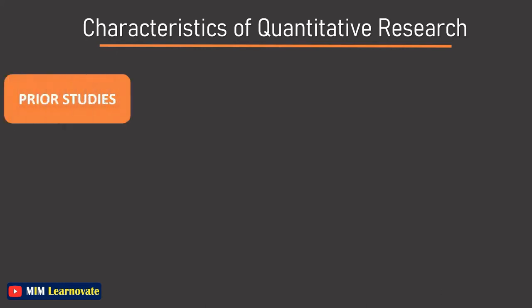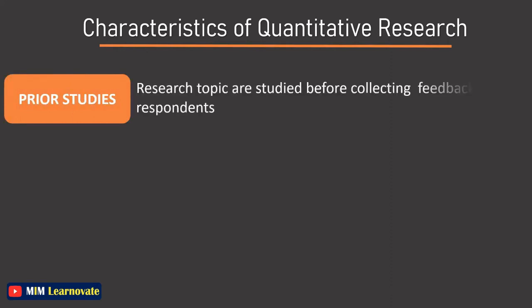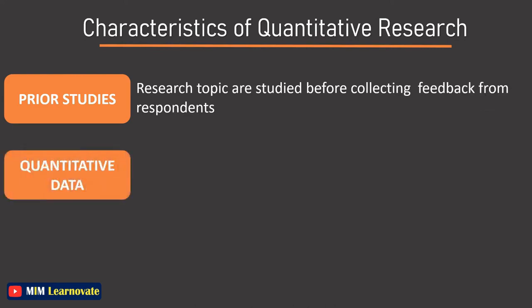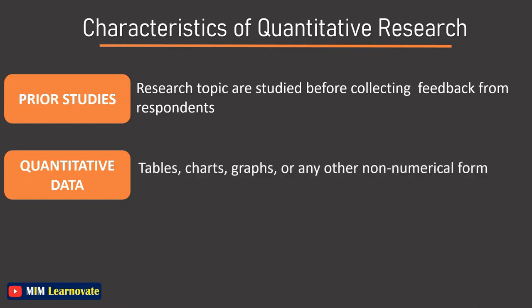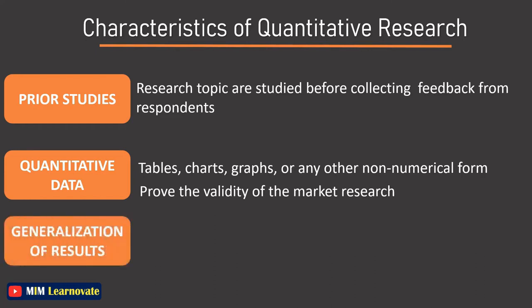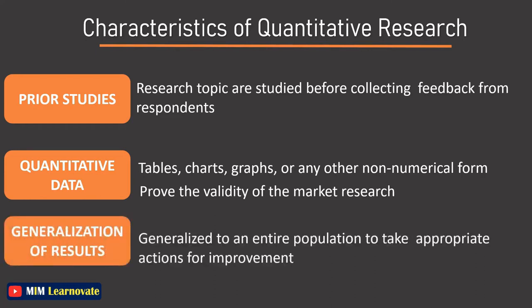Prior studies: Various factors related to the research topic are studied before collecting feedback from respondents. Quantitative data is usually represented by tables, charts, graphs, or other non-numerical forms, making it easy to understand and prove validity of the market research. Generalization of results: Results of this research method can be generalized to an entire population to take appropriate action for improvement.